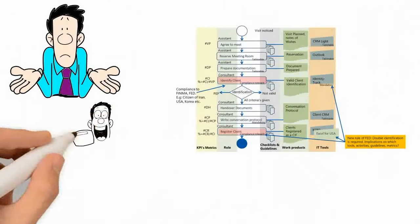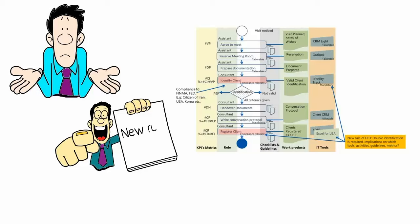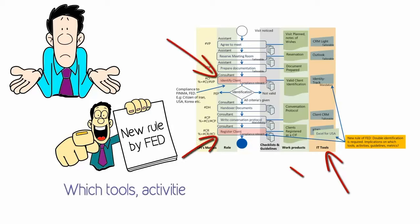Finally, let's try to think about what happens if we have a new rule from the FED. For example, they want to have a double identification instead of a simple identification. We now need to answer the question, which tools, activities, guidelines, and metrics are affected by this change.